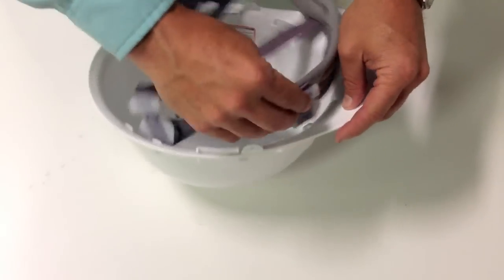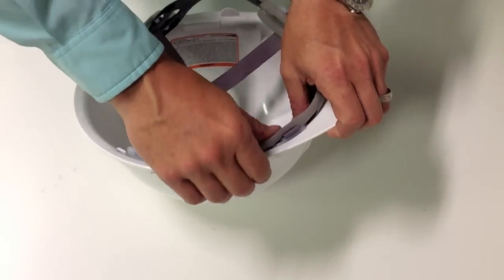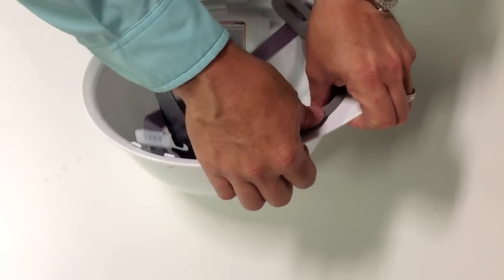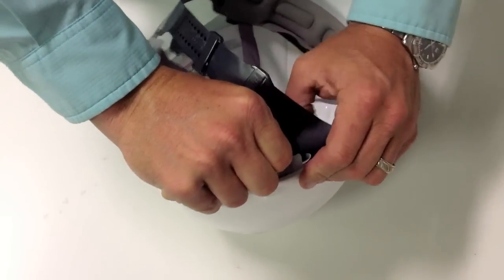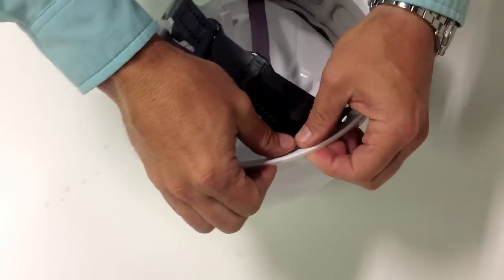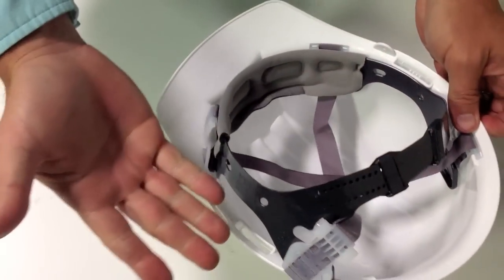So with the brow pad facing forward, you're just going to start with any one of the four points, put it in, snap it in place, go to your next position, same thing, continue that around the helmet.